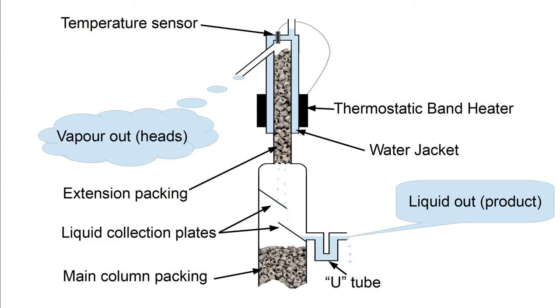I've added a U-tube to prevent vapor from escaping with the product. I guessed how deep it should be and three centimeters works fine. The pressure inside the top of the column is very close to atmospheric. The column extension is a piece of 15 millimeter copper pipe filled with spiral prismatic packing. It's heated by a water jacket that is thermostatically controlled with a temperature sensor at the top and a band heater at the bottom.